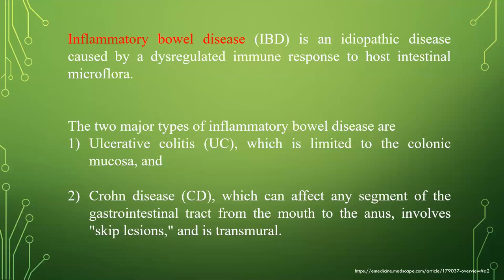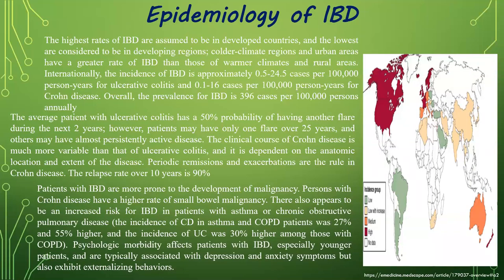Inflammatory bowel disease is an idiopathic disease caused by dysregulated immune response to host intestinal microflora. The two major types are Crohn's disease, which can affect any segment of the gastrointestinal tract from the mouth to the anus with skip lesions and transmural involvement, and ulcerative colitis. Higher rates of IBD are assumed in developed countries and lower rates in developing regions. Colder climate regions and urban areas have greater rates of disease than warmer climates and rural areas.